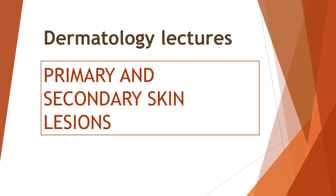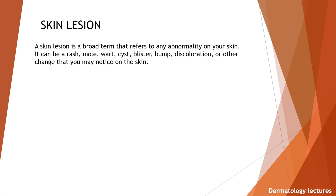Hello everyone. Today in dermatology lectures we are going to discuss primary and secondary skin lesions. A skin lesion is a broad term that refers to any abnormality on your skin. It can be a rash, mole, wart, cyst, blister, bump, discoloration or other change that you may notice on the skin. There are two types of skin lesions: primary lesion and secondary lesion.